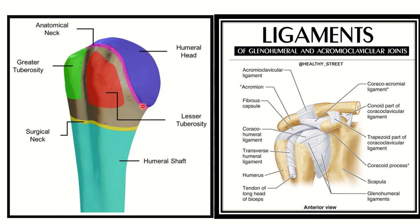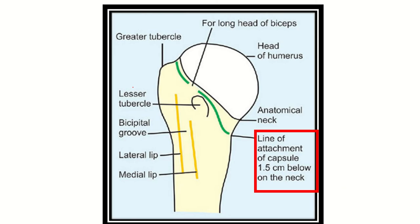In the second picture we can see the ligaments of the shoulder joint, including the glenohumeral ligament and other ligaments attached here. We can also see the surgical neck in this picture. Along the surgical neck there is usually no significant ligament present.